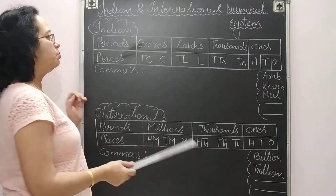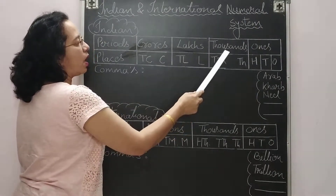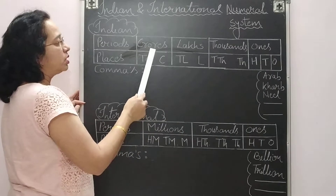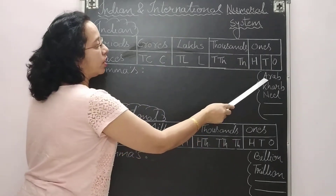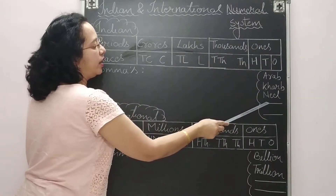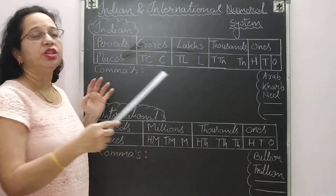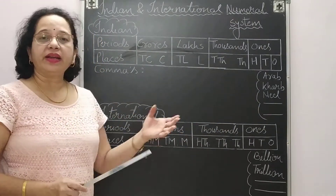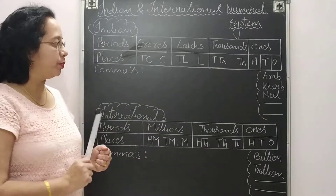In the Indian number system, we have the following periods: ones, thousands, lakhs, crores, and after that we have arab, kharab, neel. The next two periods are your work to find out and write the answer in the comment section.